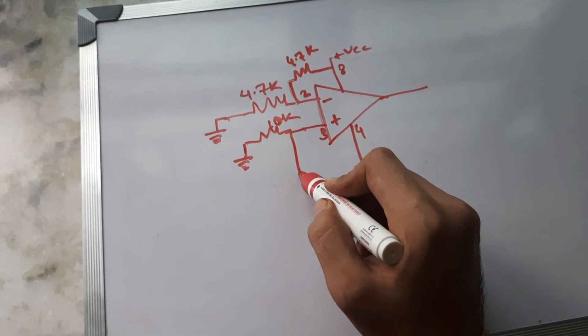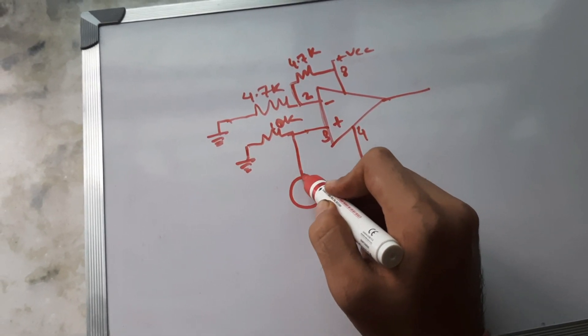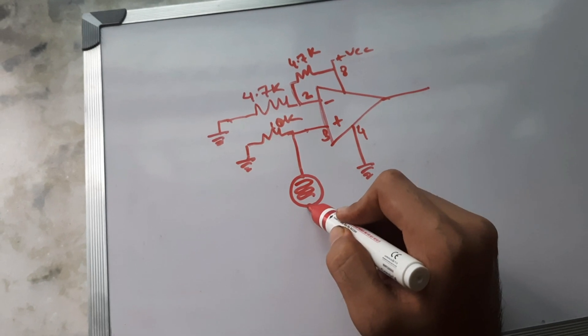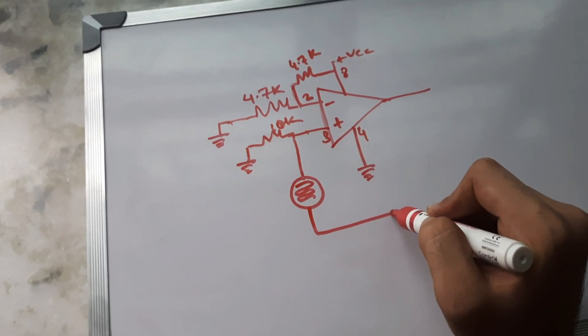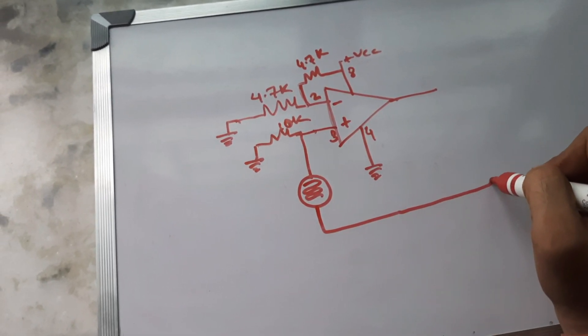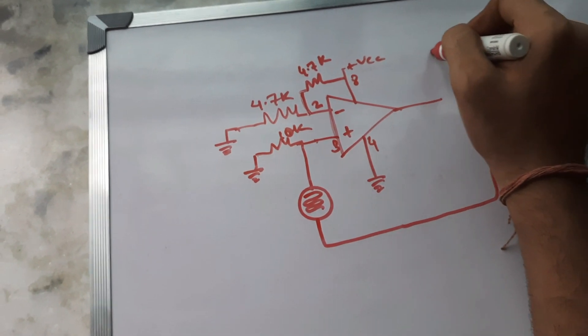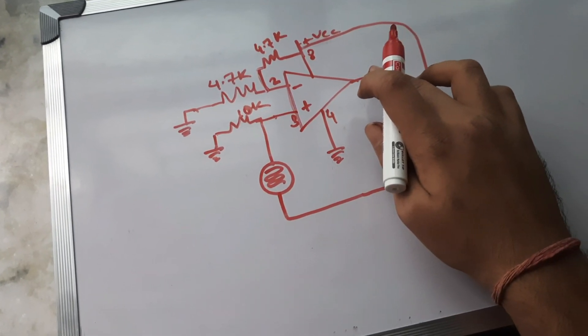And then from at this point we'll be adding an LDR which is the bread and butter of a circuit. And the negative and the other terminal of this LDR will be connected to the positive terminal.